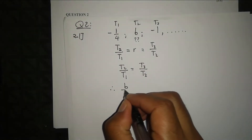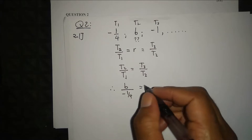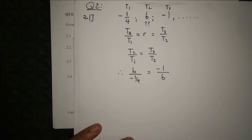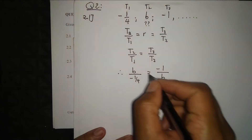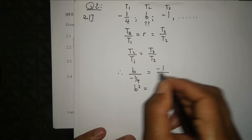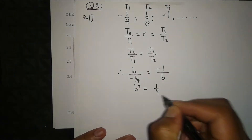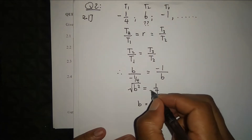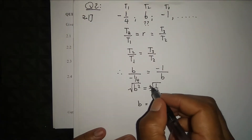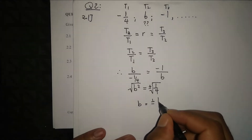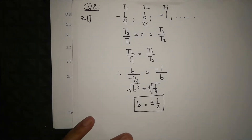Therefore t2 over t1 equals t3 over t2. This is our equation. Substituting: t2 is b, t1 is negative one over four, t3 is negative one, and t2 is b. We have an equation with fractions to solve for b. Cross-multiplying gives b times b equals b squared equals negative one over four times negative one, which is positive one over four.